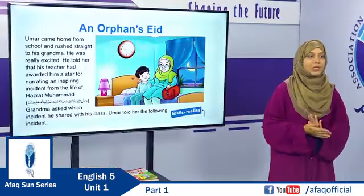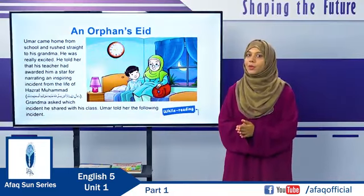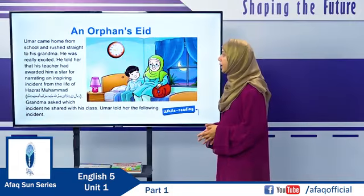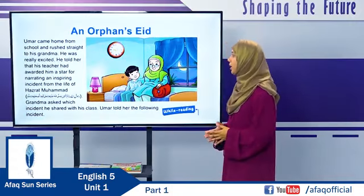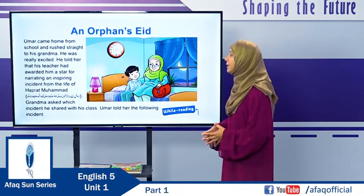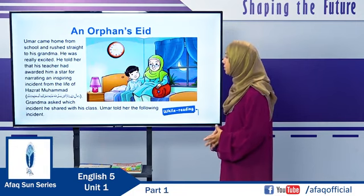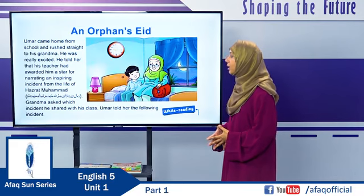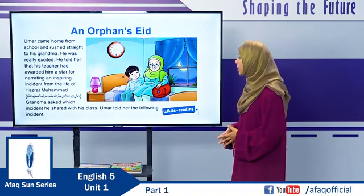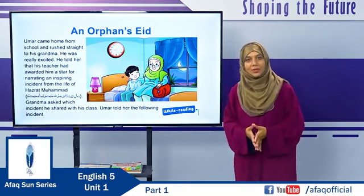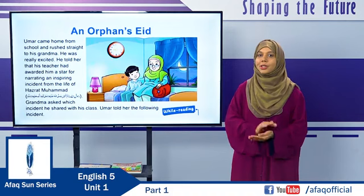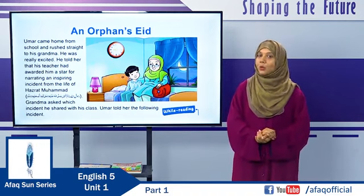Now we will turn to page 2 and start reading the story. I will read the first paragraph for you. An Orphan's Eid: Umar came home from school and rushed straight to his grandma. He was really excited — his teacher had awarded him a star for narrating an inspiring incident from the life of Hazrat Muhammad Rasulullah, Khatamun Nabijeen, Sallallahu Alaihi Wa Sallam. Grandma asked which incident he had shared. Can you predict which incident he is going to tell?